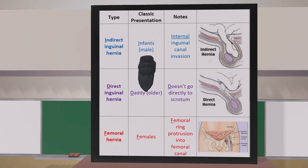Then we come to the direct inguinal hernia. The classic presentation is in a daddy, or in older males — usually older than a regular daddy. D is also for 'doesn't go directly to scrotum,' so although it may pass through the superficial inguinal ring, it generally does not go to the scrotum. If we look at this picture, it originates medial to the inferior epigastric vessels.